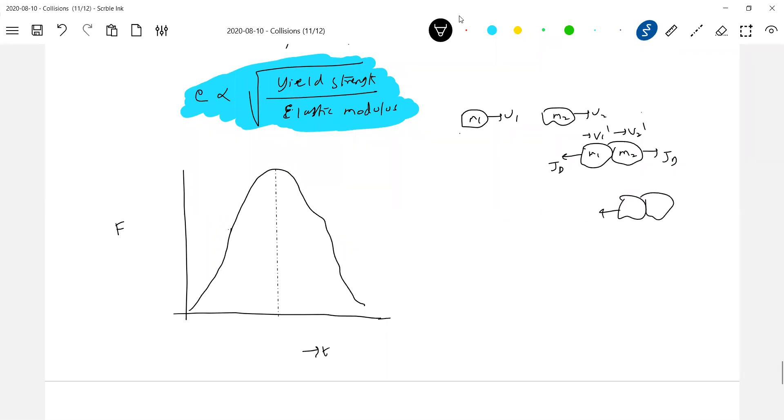And again, impulse of reformation. Maximum deformation then impulse of reformation. This is the way of thinking on a problem. Your collision phenomena you should always analyze. This is before collision, this is after collision. If force is acting, that force as a function of time I'll plot it. This time is deformation time delta Td, and this is reformation time delta Tr.